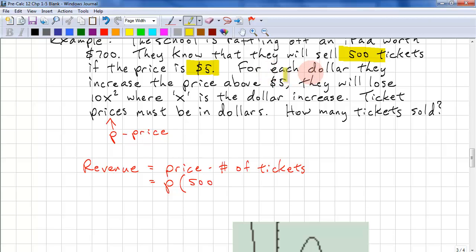Now, the next part says for each dollar, they increase the price above $5, they will lose this many tickets. Remember, we're calculating the number of tickets. It's minus because we're losing these tickets. So it's 10x squared.